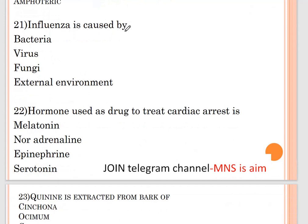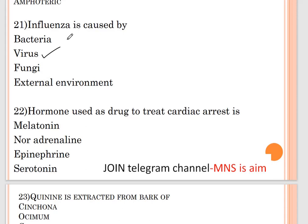Question number twenty-one: influenza is caused by — options are bacteria, virus, fungi, or external environment factor. The correct answer is virus. Diseases like AIDS, influenza, and mumps are all viral diseases.